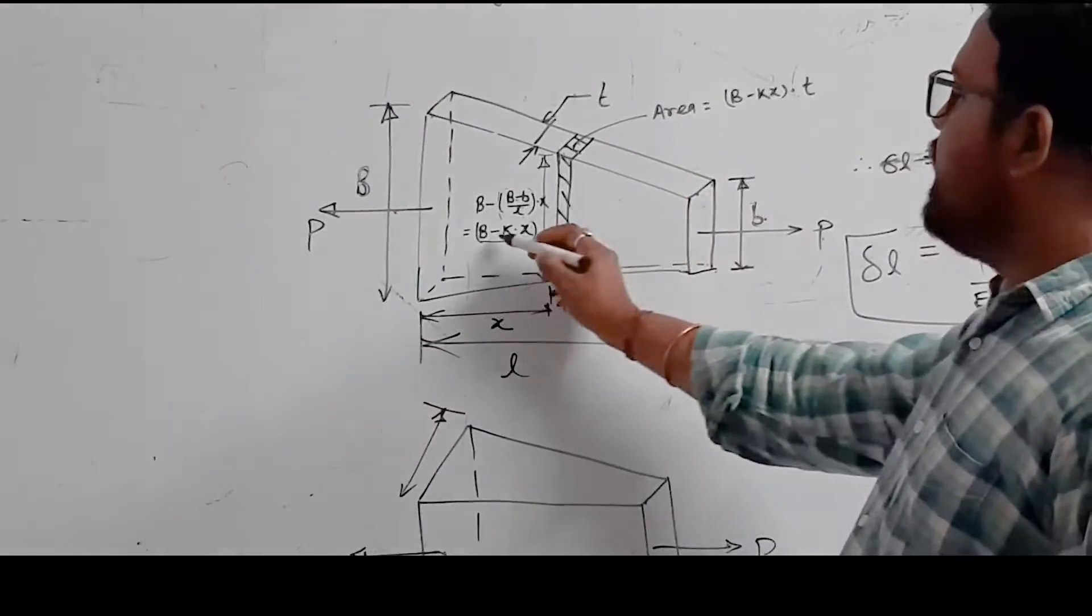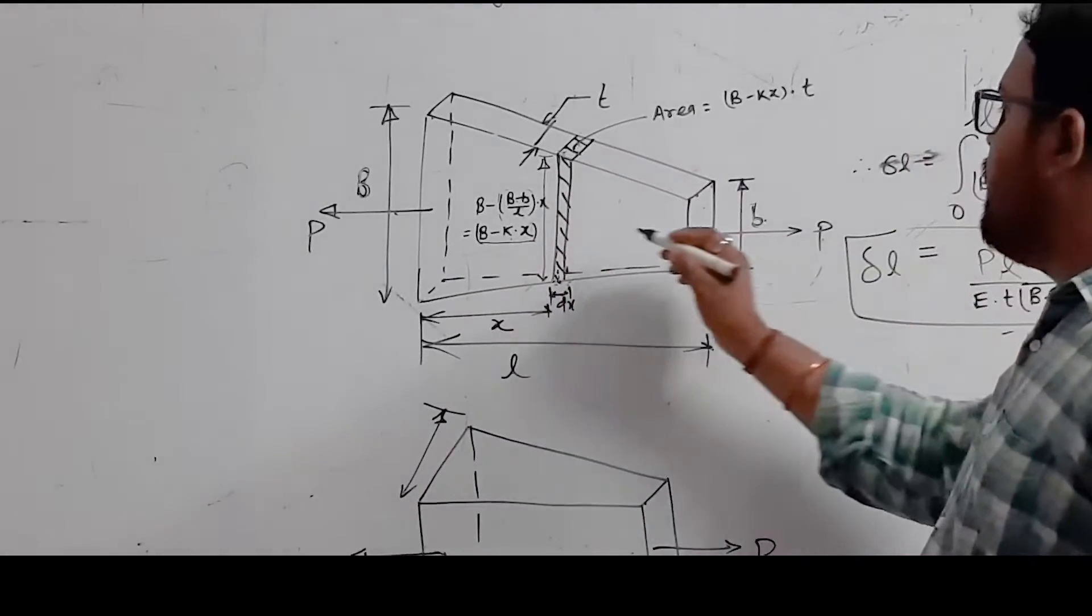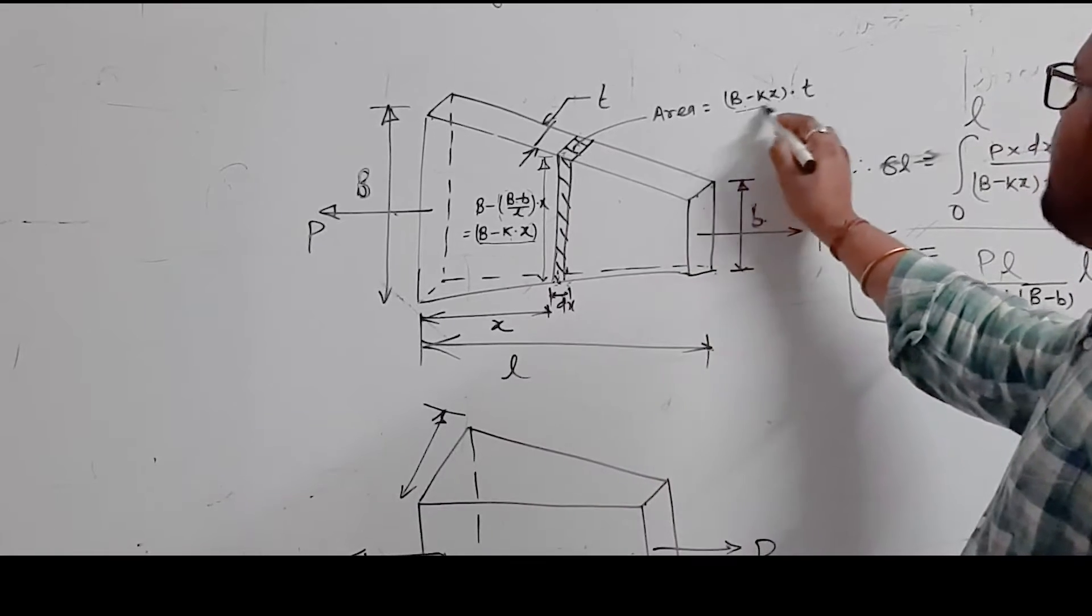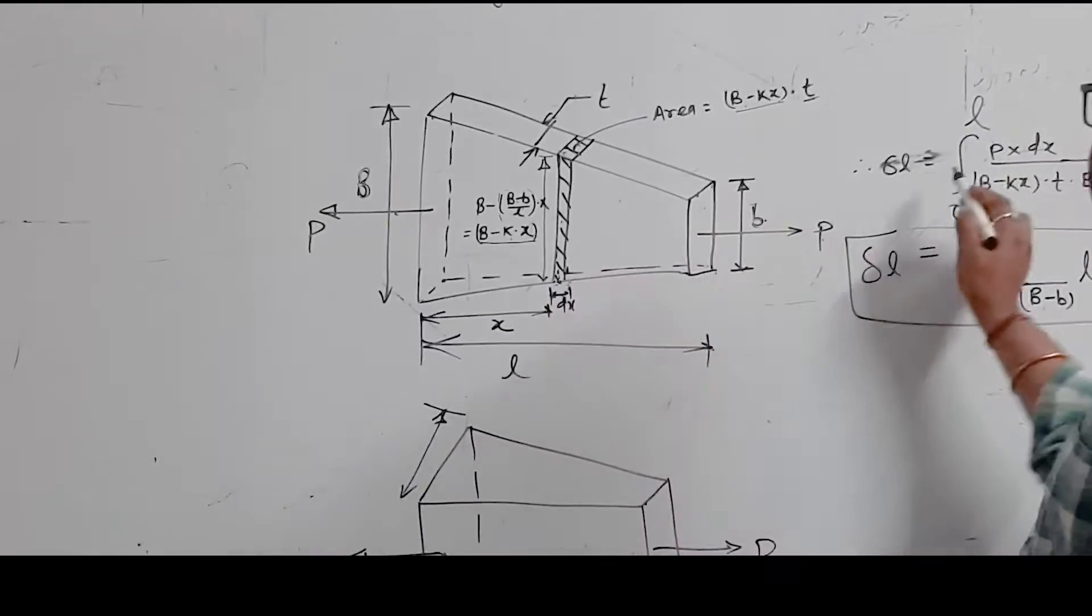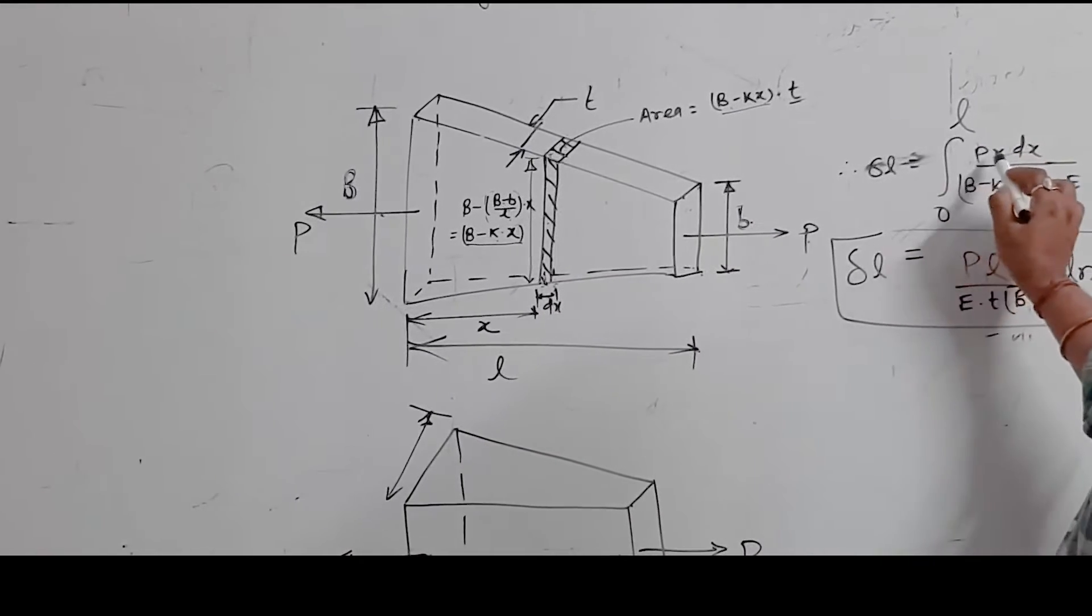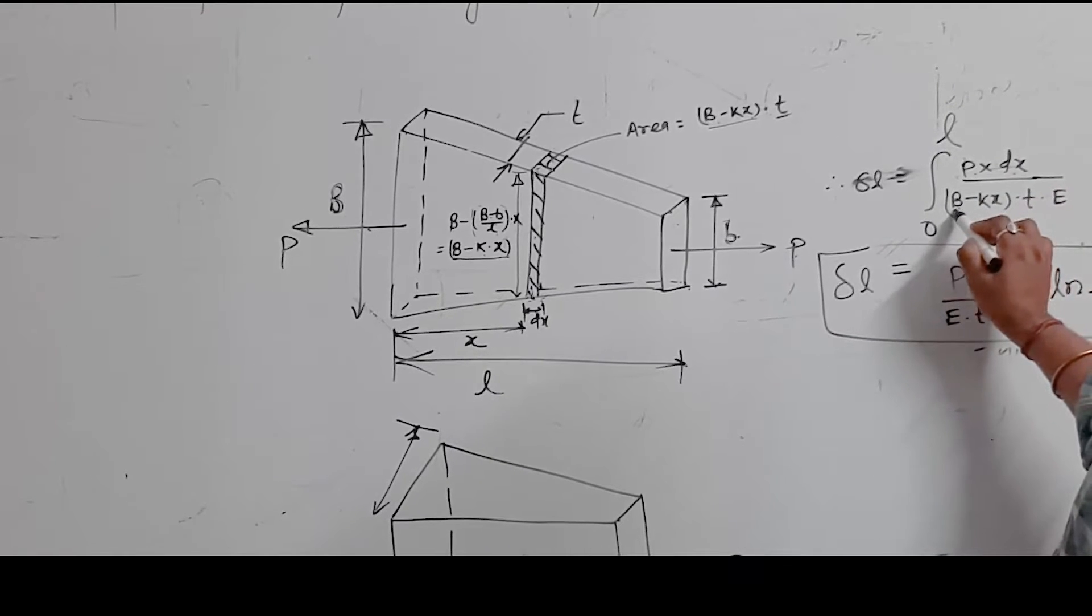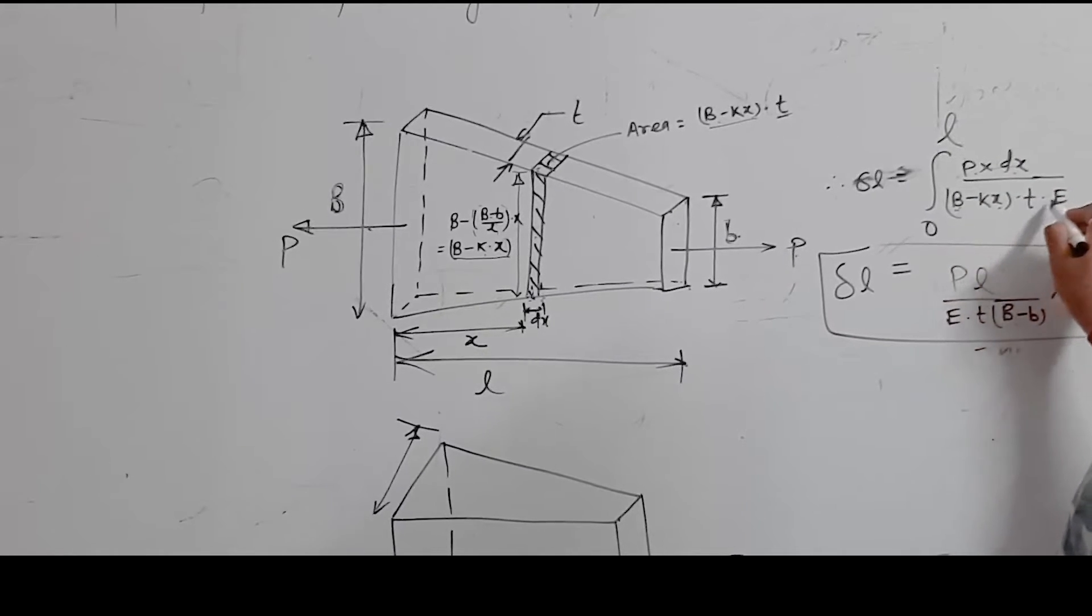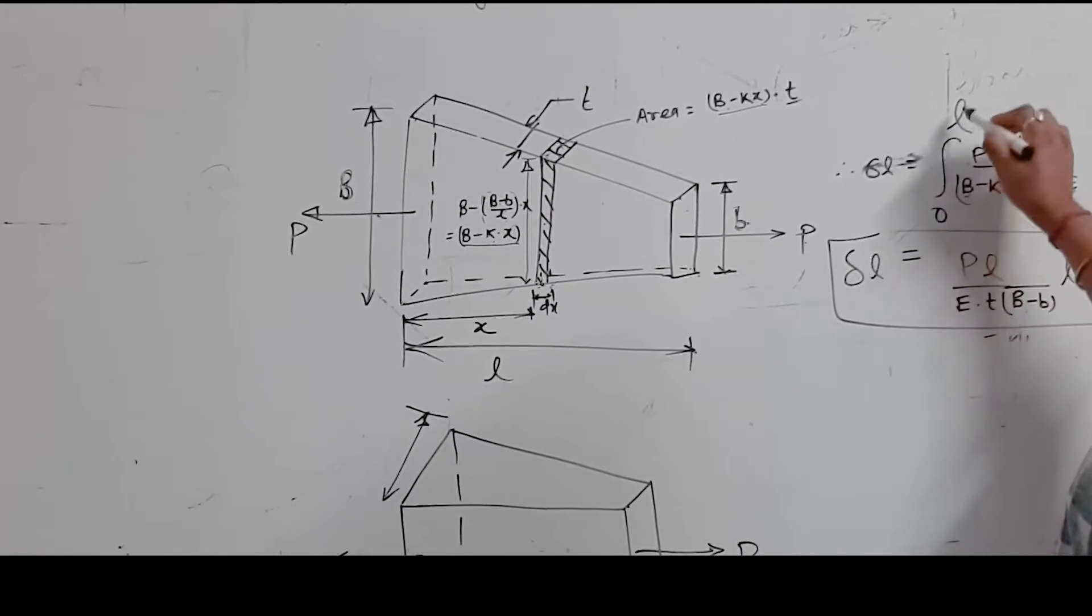The deformation of this elemental strip, like we learned in previous columns, will be P dx divided by (E times A), where area A is (B minus kx) times T times E. This will be the elemental strip deformation, which we integrate from 0 to L.